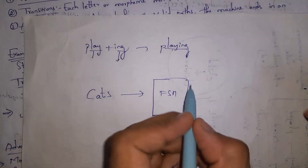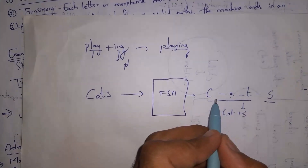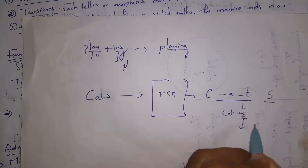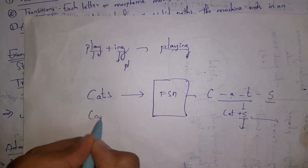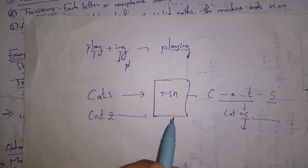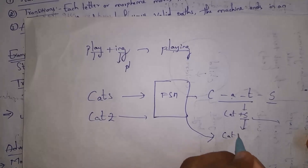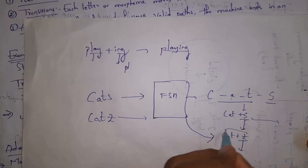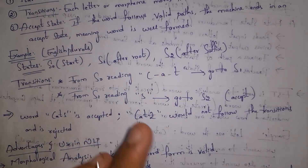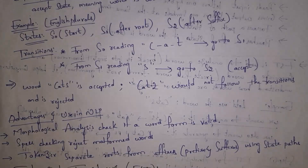For example, if I give the word 'cats' to this machine, it reads each letter: c, a, t, s. It breaks the word into 'cat' plus 's', and since it knows all plurals end with 's', it accepts the word. If I give 'catz', it reads c, a, t, z — since the last letter is 'z', which doesn't match the plural rule, the model rejects this word. So 'cats' is accepted because plural ends with 's', but 'catz' is not.